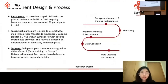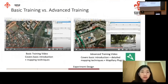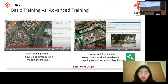Each participant is randomly assigned to either group one (basic training) or group two (advanced training). Each group has a balance in terms of gender, age, ethnicity, and religion. The basic training video covers a very basic introduction and mapping techniques, whereas the advanced training video not only covers what the basic training covers but also includes a specific feature: the Mapillary plugin, which provides street view images. So people in the advanced training group are able to rely on street view imagery during their mapping process.